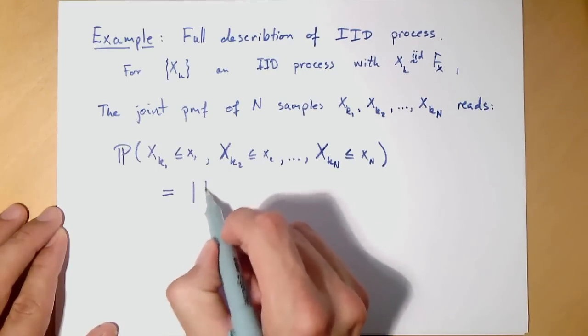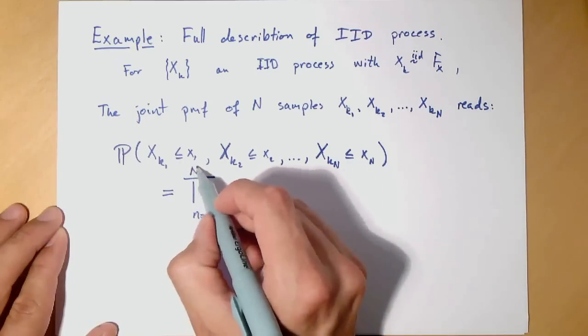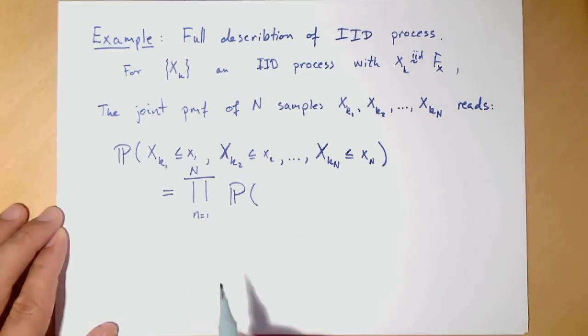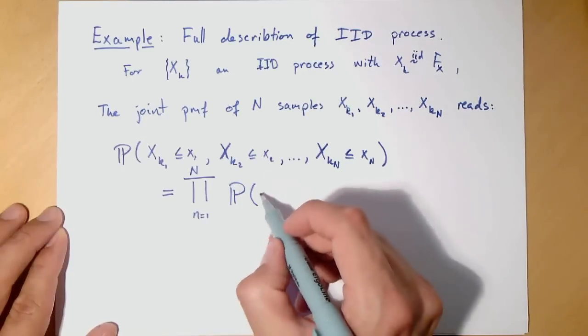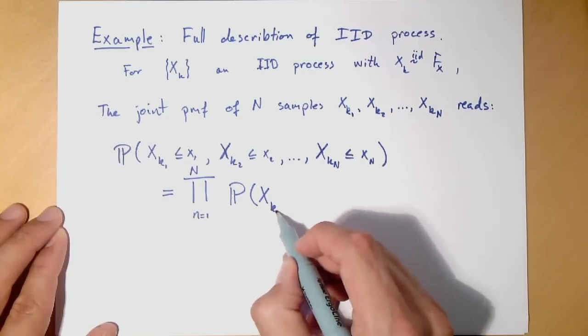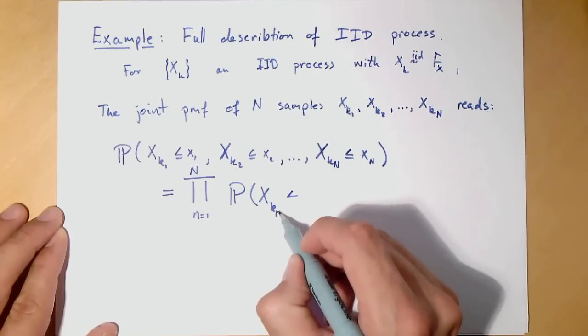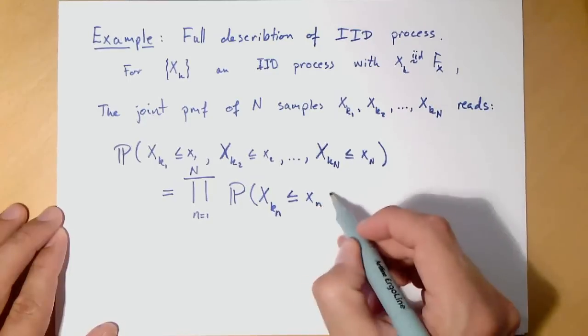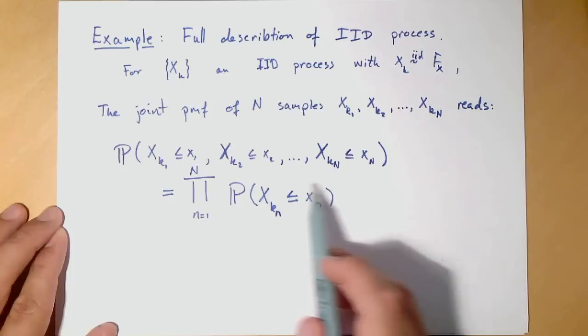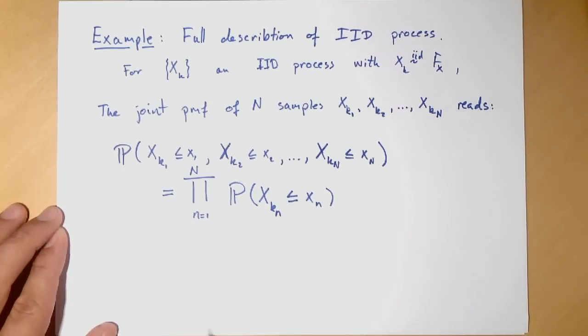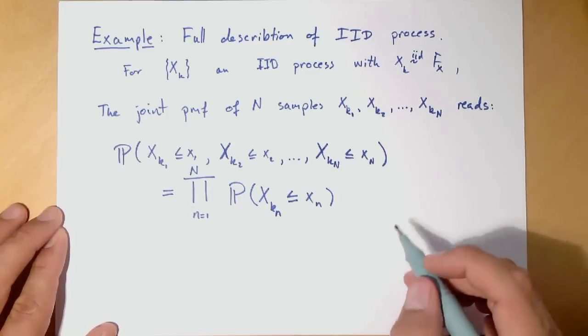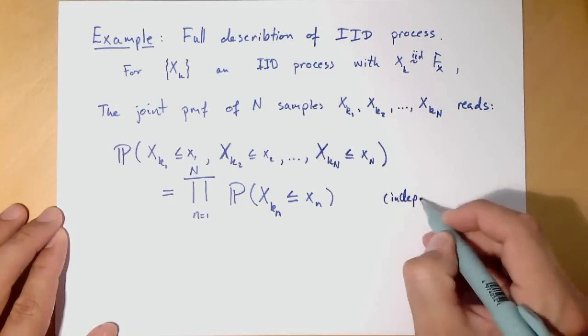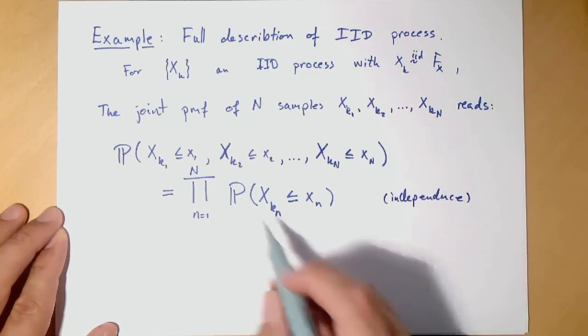We know that it's IID, which means that they're independent, which means that this gigantic PMF actually can be factorized. So we can make a product n equal to 1 up to capital N. And for each of these n's, we would need a PMF x_kn less than or equal to xn, and we take the product of all n of these. That was by independence, so we could factorize.